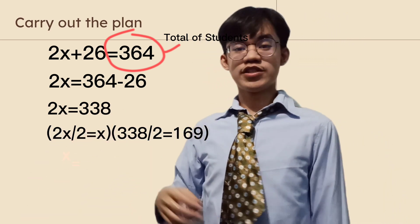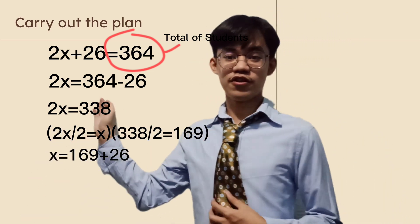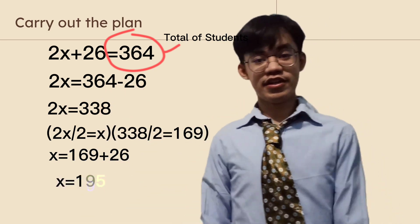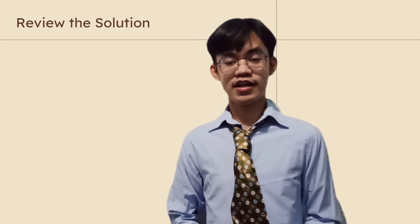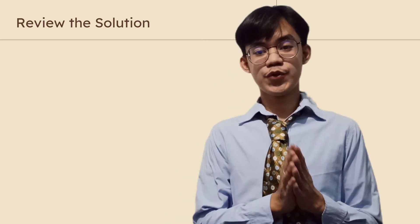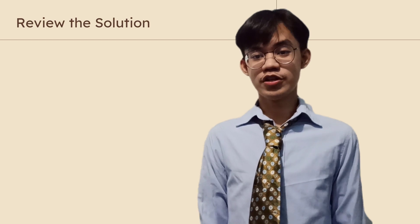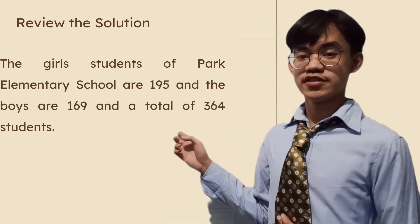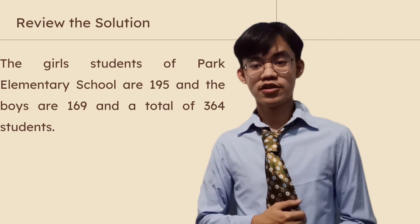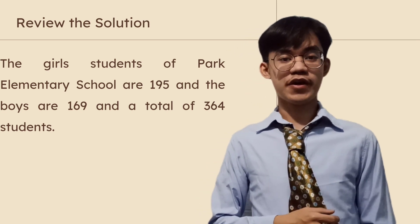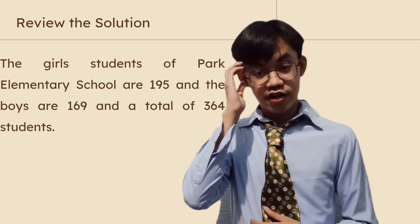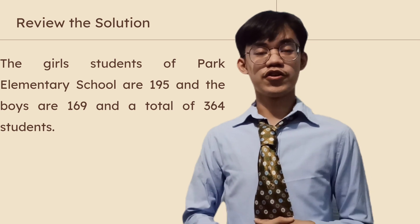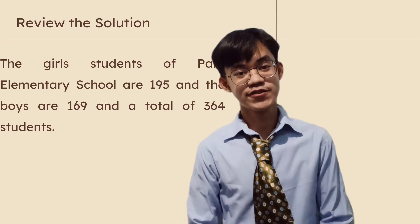Then, x equals 169 plus 26, giving a total of x equals 195. So, to carry out the last step of the plan, we need to review the solution. The girl students of Park Elementary School are 195 and the boys are 169, in a total of 364 students.